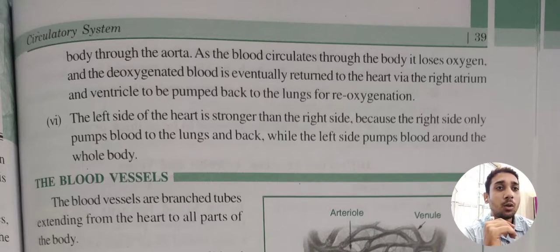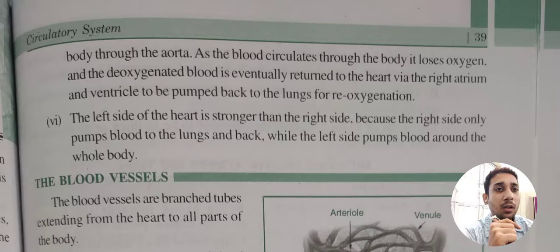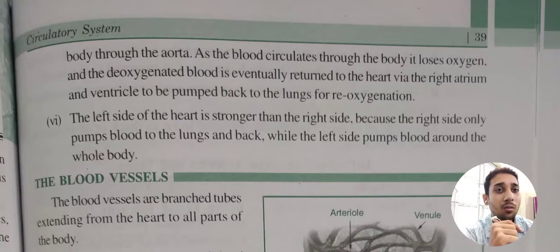As the blood circulates through the body, cells take the oxygen and give carbon dioxide back to the blood, so the blood loses its oxygen and becomes deoxygenated. The deoxygenated blood returns to the heart via the right atrium, then moves to the right ventricle, which pumps it to the lungs where it picks up oxygen again and becomes oxygenated blood.